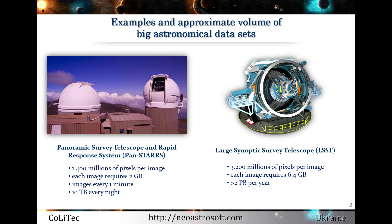All this data can be received from the network of automated ground and space-based observation systems or from old astronomical archives. For example, Pan-STARRS in Hawaii contains two telescopes with 1.8-meter aperture, both equipped with the largest CCD camera, which records about 1.4 billion pixels per image. Each image requires about 2 gigabytes of storage and exposure time up to one minute, so more than 10 terabytes of data are obtained every night.